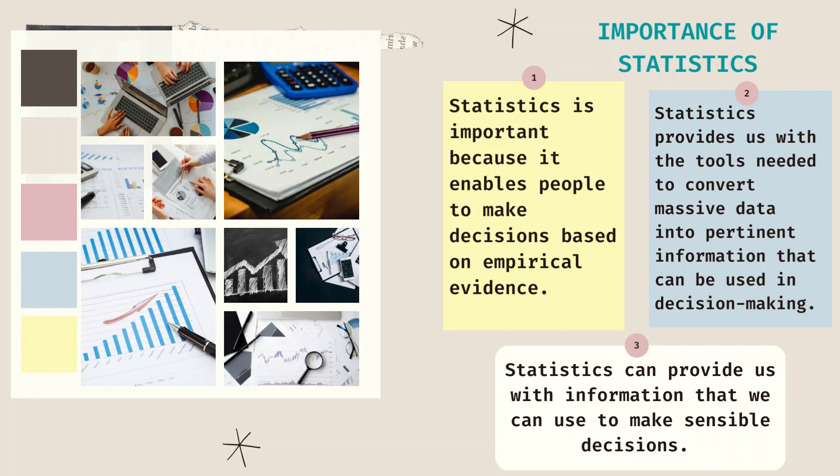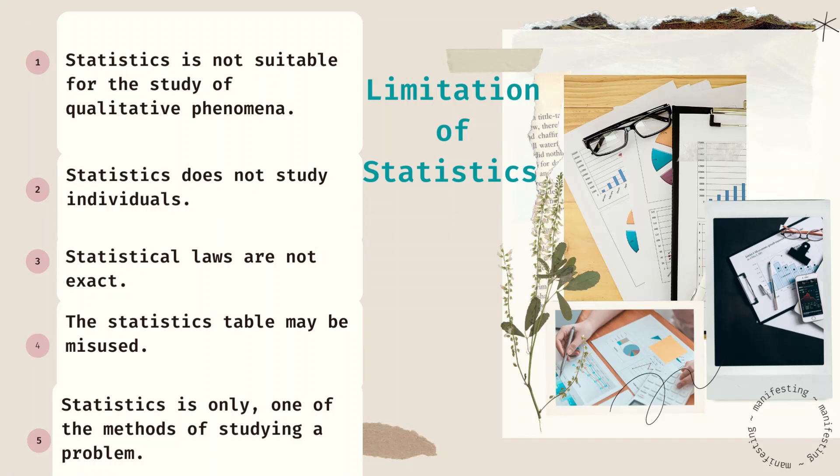Now what are the limitations of statistics? We have five. First limitation of statistics: it cannot be used for the study of qualitative phenomena. Second, statistics is not study of an individual, it is a study of the whole population or the sample of that particular population. Next, statistical laws are not exact. And number four, statistics tables may be misused.